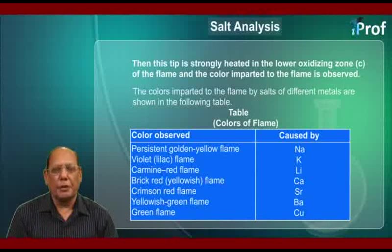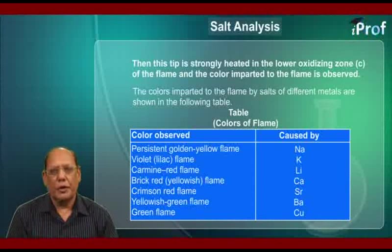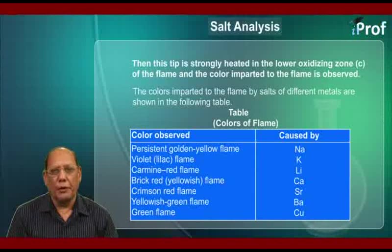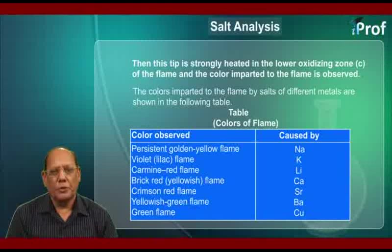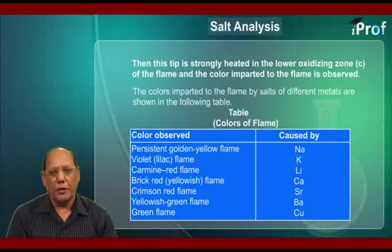The colors imparted to the flame by salts of different metals are shown in the following table. A persistent golden yellow flame is given by sodium; violet or lilac flame by potassium; carmine red flame by lithium; brick red (yellowish) flame by calcium; crimson red flame by strontium; yellowish green flame by barium; and green flame by copper.